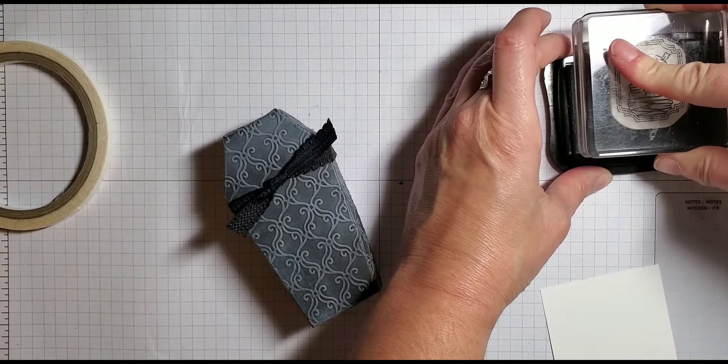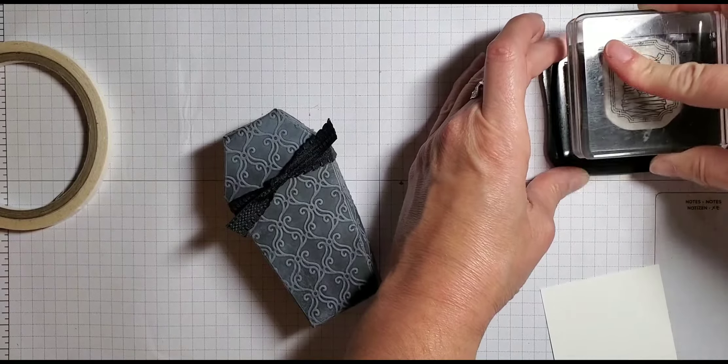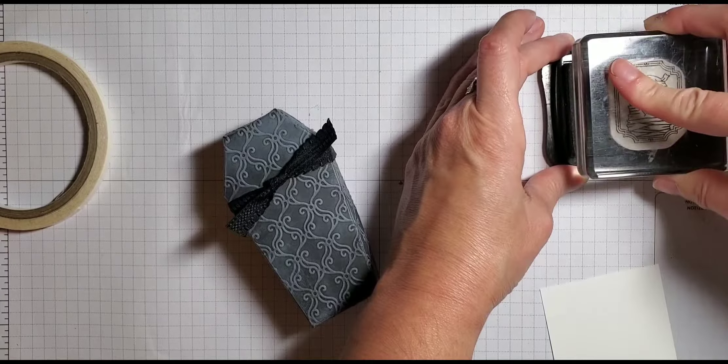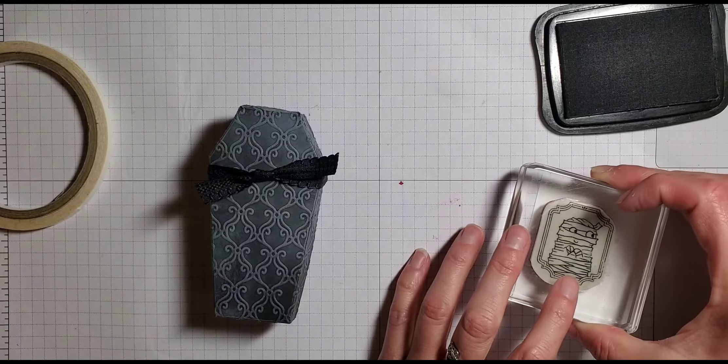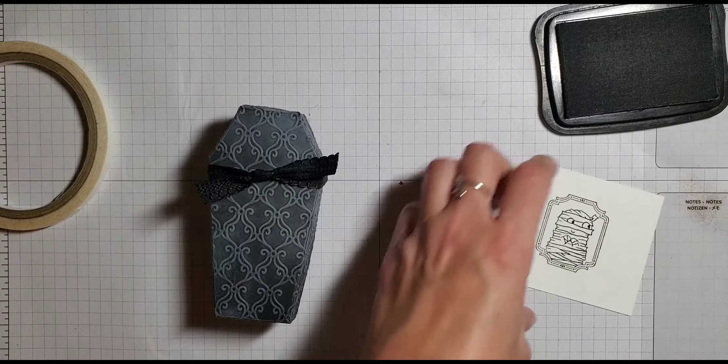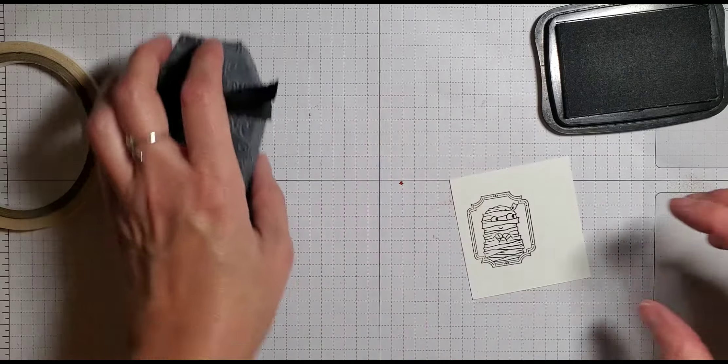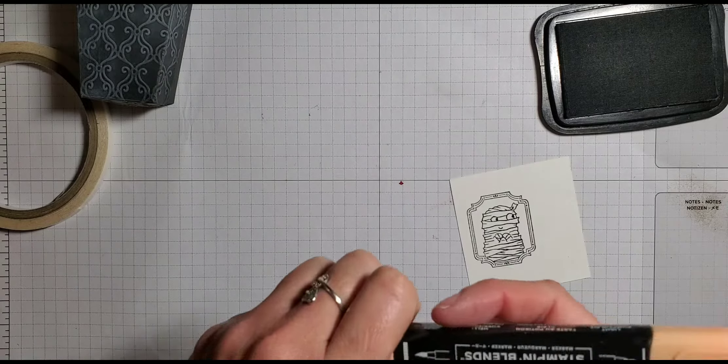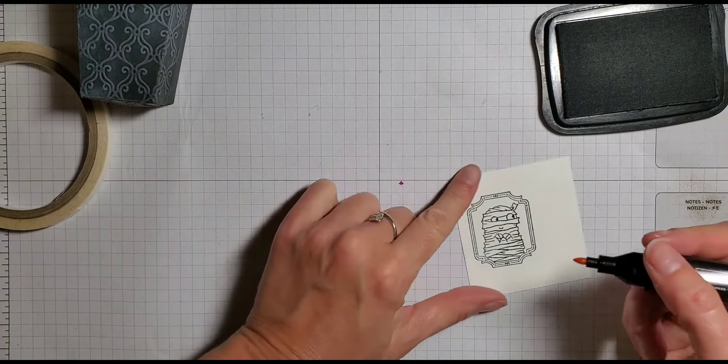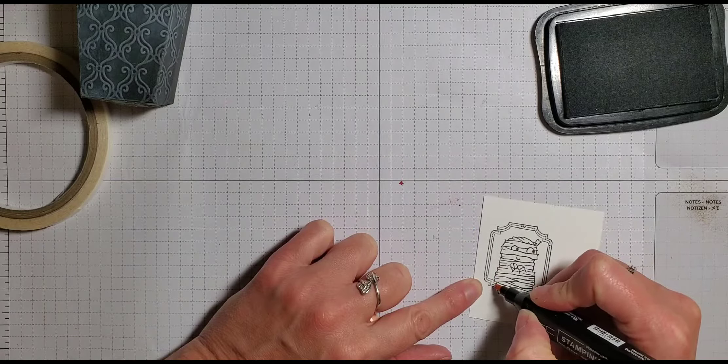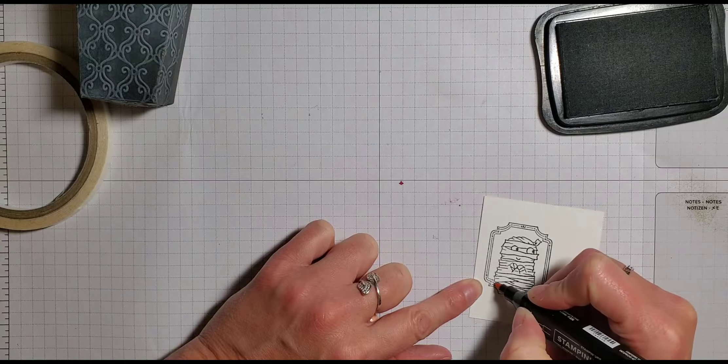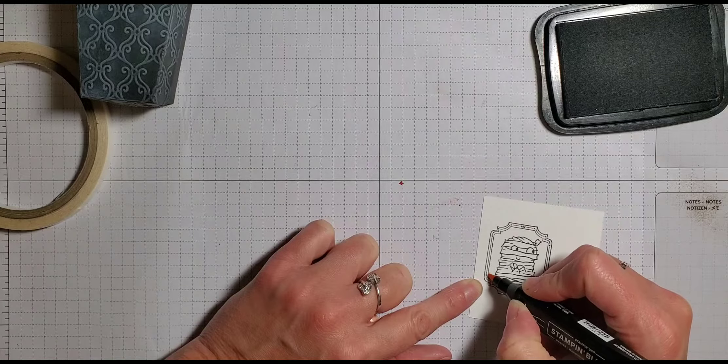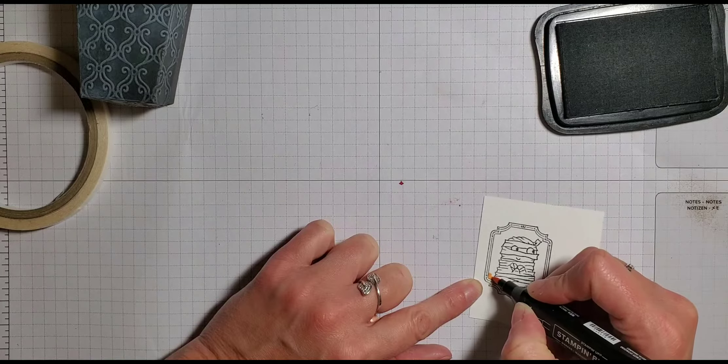And then we're going to take the Memento black ink and the little mummy stamp from Spooktacular Bash. Super cute, right? I'm going to go ahead and ink this up. Oh, and I didn't do magic of TV here. And my dies aren't sitting right here either. So I'm going to stamp this off to one side. And then I'm going to color. So I just colored the inside of this. Here. Right here.